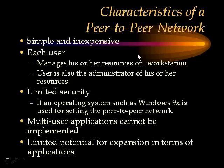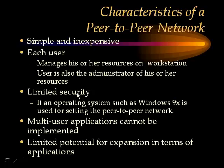To summarize the factors concerning the peer-to-peer network architecture: it is simple and inexpensive because it does not involve a server. Each user manages his or her resources on a workstation and becomes the administrator of those resources. There is no centralized control. Security is very poor with Windows 9x-based networks and somewhat better with Windows 2000. Multi-user applications such as a multi-user database cannot be implemented without a server, and there is no real potential for expansion. The peer-to-peer network is best suited for sharing files and printers.